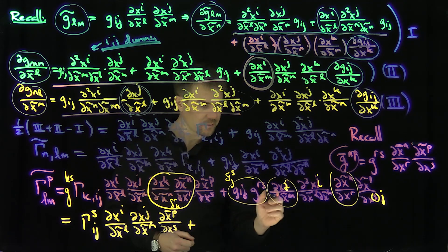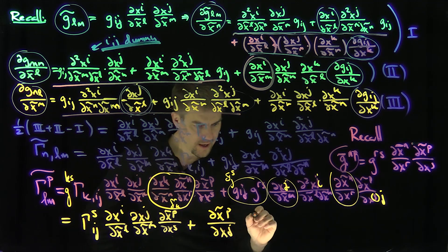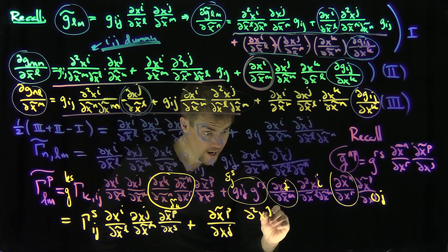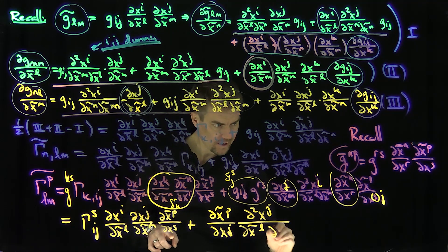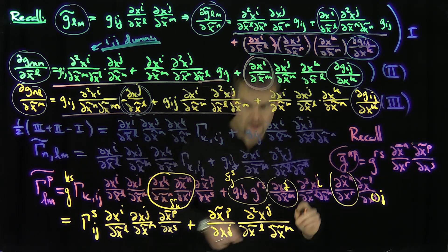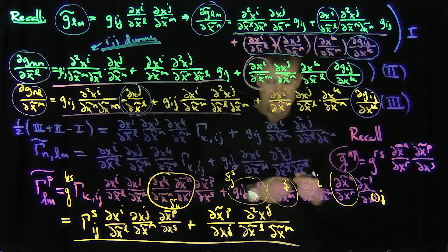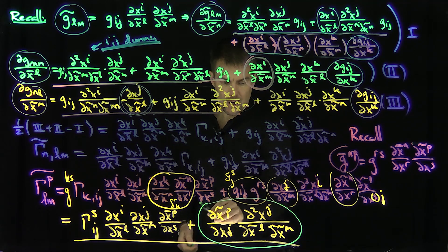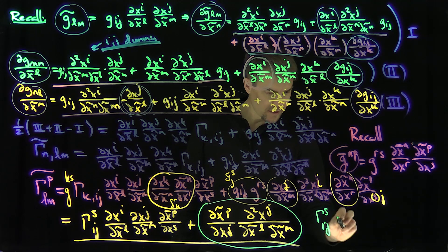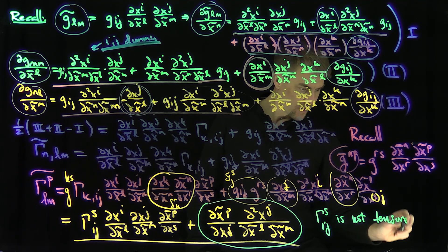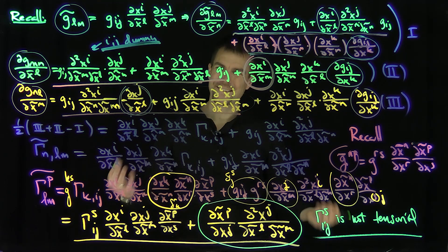Those terms reduce to (∂X̃^P/∂X^J) times ∂²X^J/(∂X̃^L ∂X̃^M). This gives us the transformation law for the upper Christoffel symbols. The important fact is that because these extra second-derivative terms exist, the Christoffel symbols Γ^S_IJ are not tensorial — they do not transform as tensors. Nonetheless, we'll use this transformation law to understand how we differentiate covariant vectors with respect to the coordinate frame. Thank you very much.